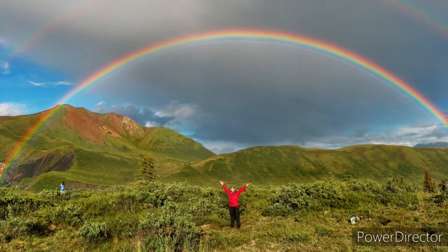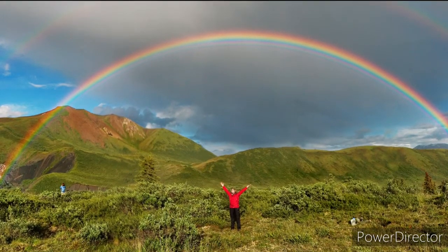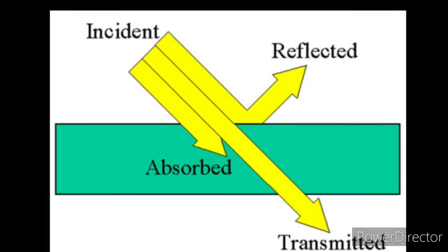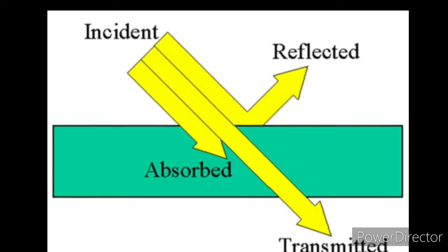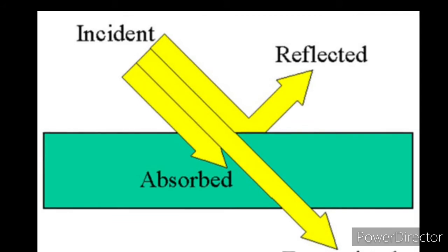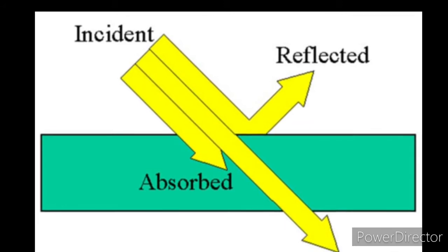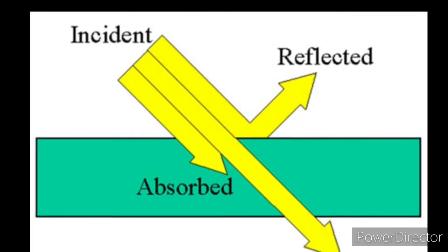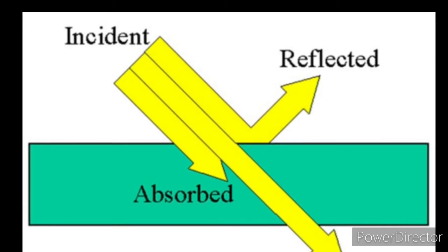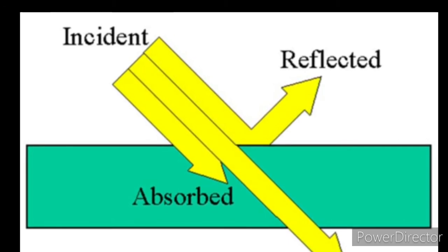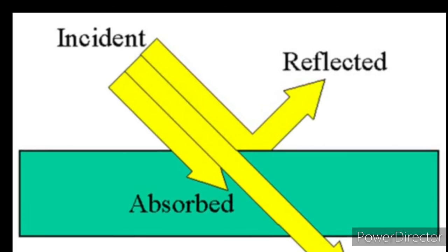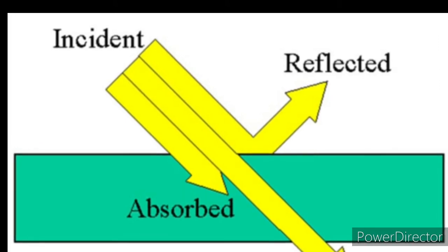Light has three basic properties. The first is that it moves in a straight line. Second, it turns back when it hits obstacles — this property is called reflection. Third, it bends or changes direction as it moves from one medium to another — this is called refraction.